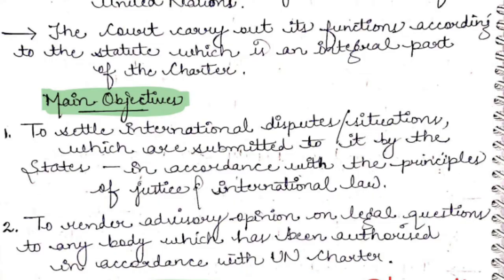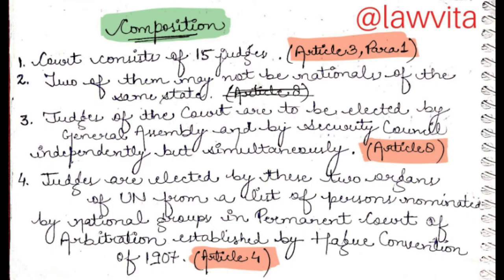Now let's look at the composition of ICJ. Point 1: the court consists of 15 judges, as per Article 3 Paragraph 1. Point 2: no two judges may be nationals of the same state — if there are 15 total judges, no two should hold the same nationality.